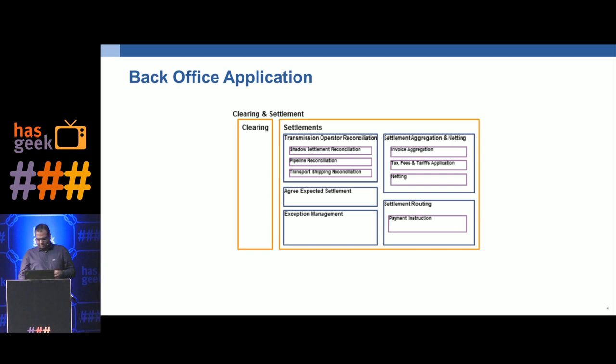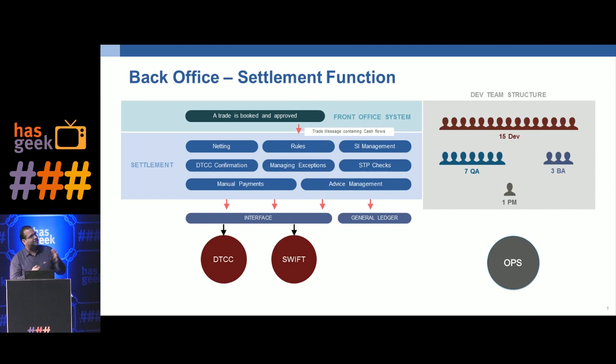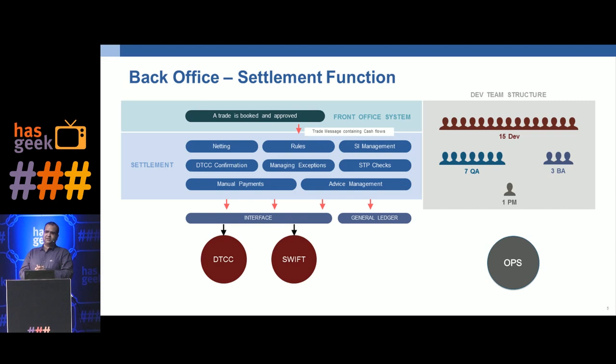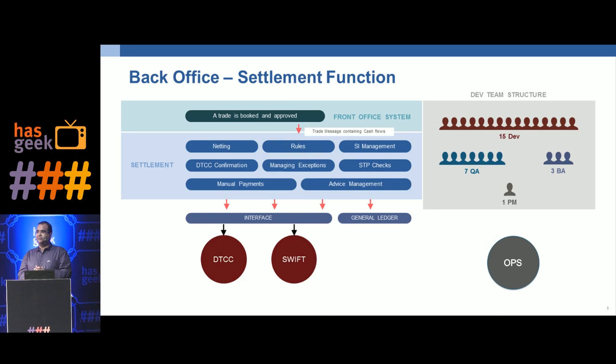It's a fairly complex system with different components: you have netting, rules, and straight-through processing. We had a team of 15 developers, 7 QAs, 3 BAs, and 1 PM. The application had 1 million lines of code. We were an agile team with 2-week sprint cycles. We had a release done every 3 months, and the release cycle itself was a problem — regression was a problem. It used to take 1 day to run all our regression tests — actually 8 hours on 10 machines.